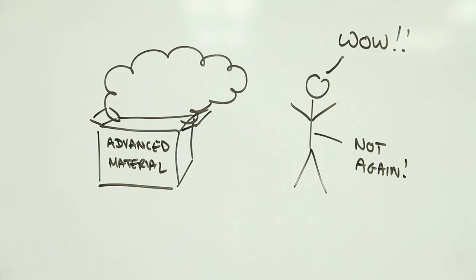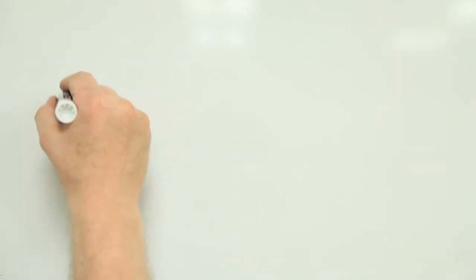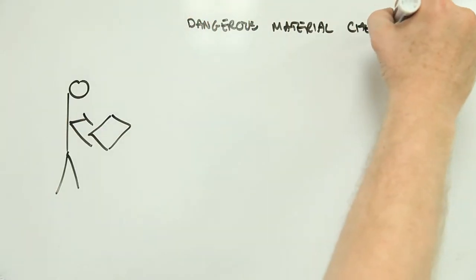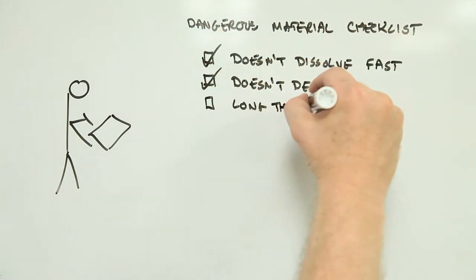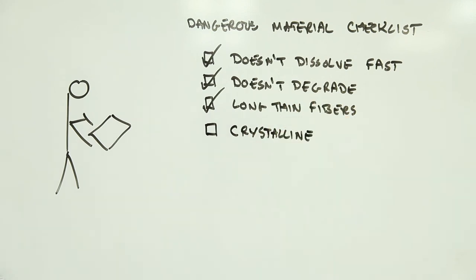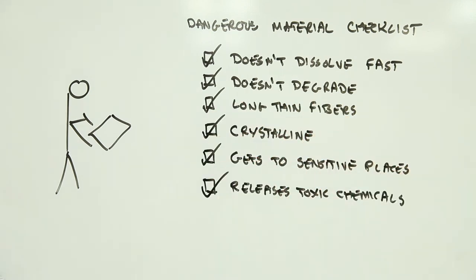But there are some warning signs we've learned to look out for in materials that our bodies don't handle so well. Particles that get into us and don't dissolve or degrade easily aren't great news. Neither are particles that are long and thin, like fibers, or crystalline, or small enough to slip into places they shouldn't, or materials that release known toxic chemicals. These are all characteristics that scream watch out if they're present in a brand new, never before tested advanced material.